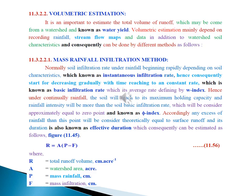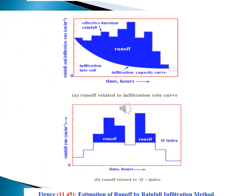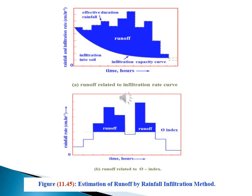Normally, soil infiltration rate under rainfall begins rapidly depending on soil characteristics, which is known as instantaneous infiltration rate. Hence, it consequently starts decreasing gradually with time reaching to a constant rate, which is known as basic infiltration rate. Any excess of rainfall than zero point would be considered theoretically equal to surface runoff and its duration is also known as effective duration, which consequently can be estimated as shown in the enclosed equation and figure. Figure showing the estimation of runoff by rainfall infiltration method.